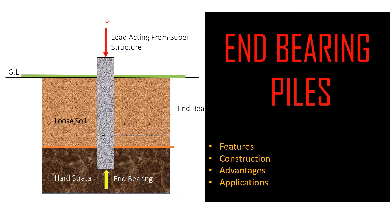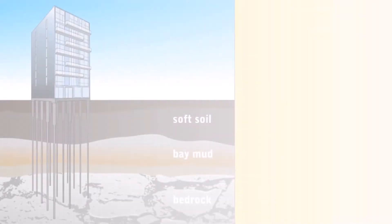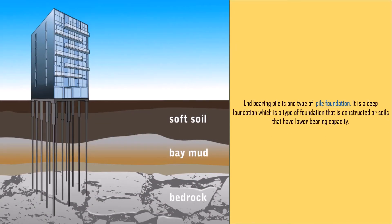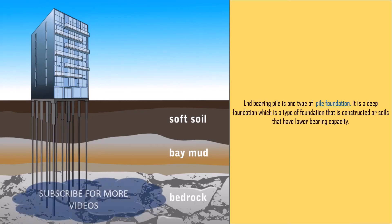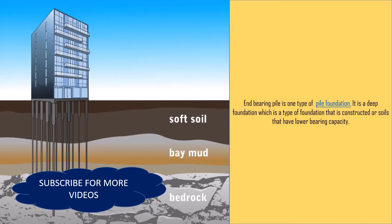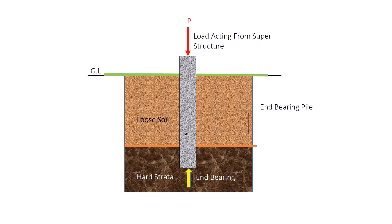End bearing pile is one type of pile foundation. It is a deep foundation constructed on soils that have lower bearing capacity. The foundation is constructed deep until a strata of soil or rock with adequate bearing capacity to take the load from the superstructure is obtained. An end bearing pile transfers load through its end, as shown in figure 1. These piles are driven into soil and placed in the intermediate layer between the weak strata and the strong strata.